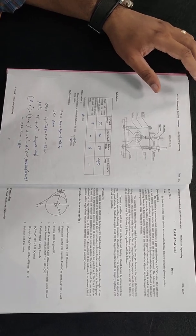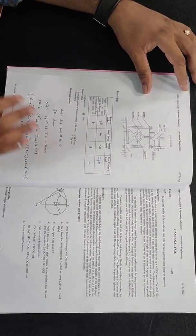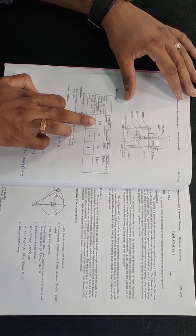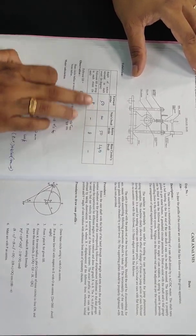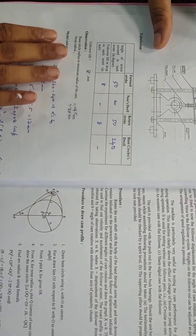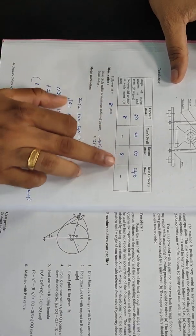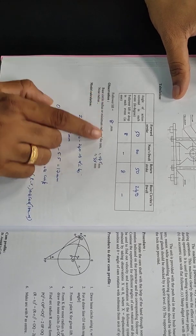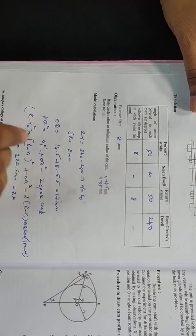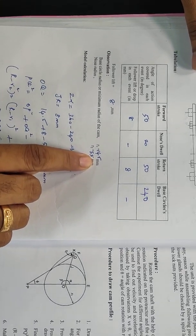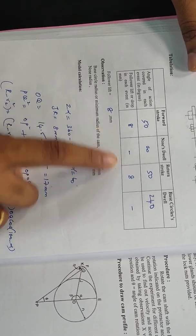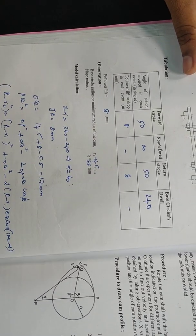Now we will be learning how to draw the CAM profile. These are the data which we obtained via experiment — for forward stroke, nose dwell, and return stroke we have got all the data. The follower lift is 8 mm. The base circle radius R1 is 14.5 mm and nose radius R2 is 5.5 mm. These two data are very important for drawing the CAM profile.